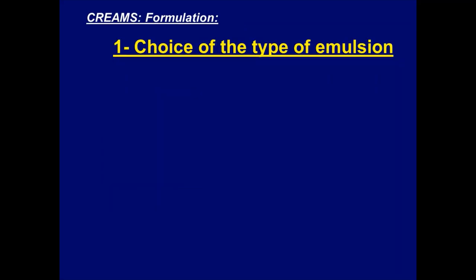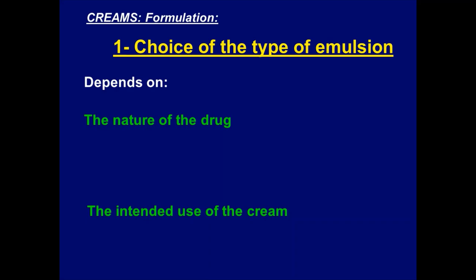How do we choose the type of emulsion? To choose the type of emulsion, you have to consider the nature of the drug and the intended use of the cream. If you have a lipophilic drug, is the suitable type of emulsion water-in-oil or oil-in-water? Sometimes students think oil-in-water is suitable for a lipophilic drug. But if you choose oil-in-water cream, the drug will be soluble in the oil, which is the internal phase.